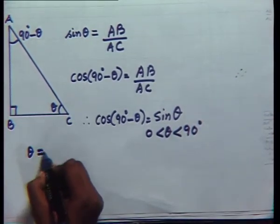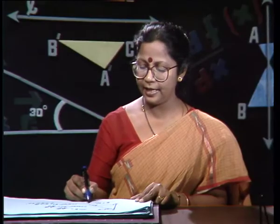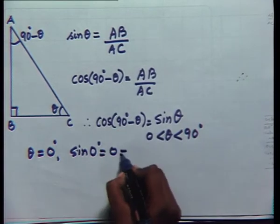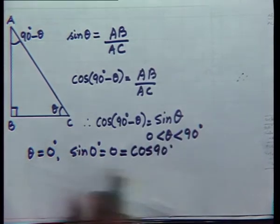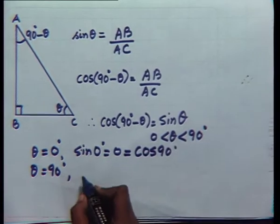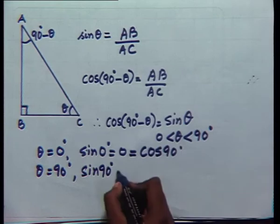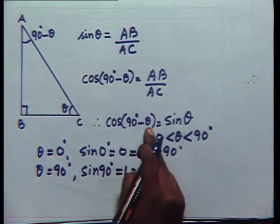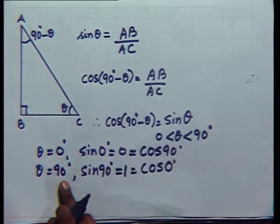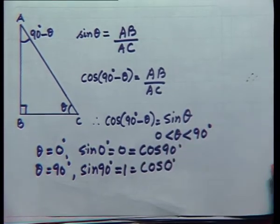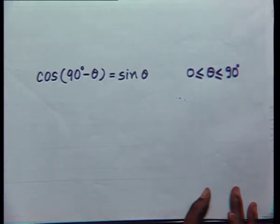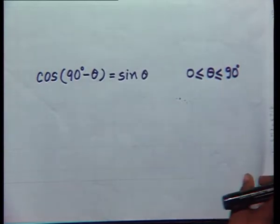You can also check that for θ = 0°: sin 0° is equal to 0, so this equation is defined. For θ = 90°: sin 90° is equal to 1 and cos(90° - 90°) becomes cos 0°, whose value is again 1. So the equation is defined, and hence cos(90° - θ) = sin θ for every θ greater than or equal to 0 and less than or equal to 90 degrees.